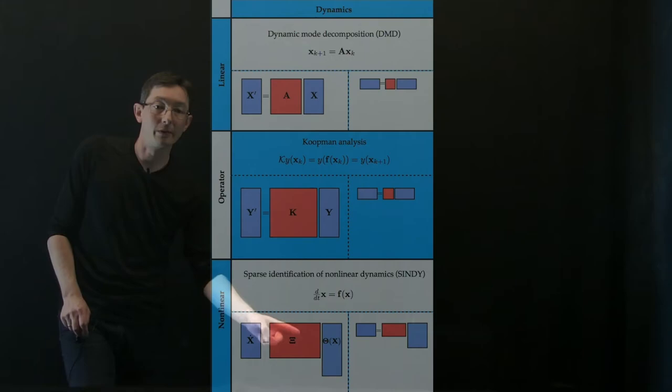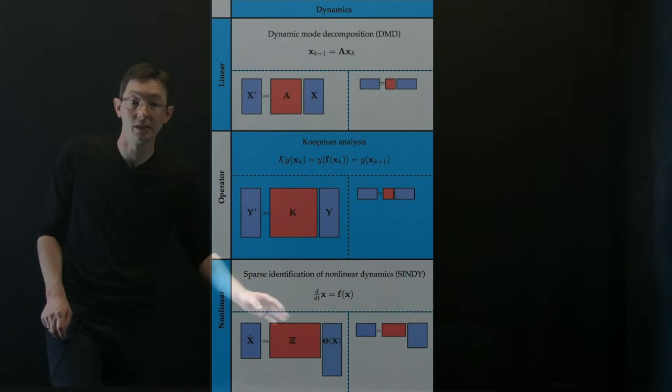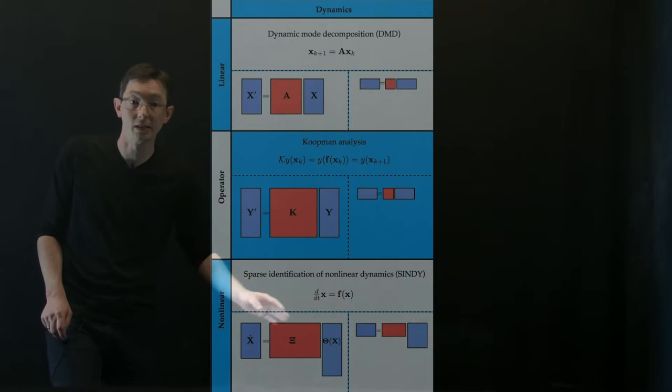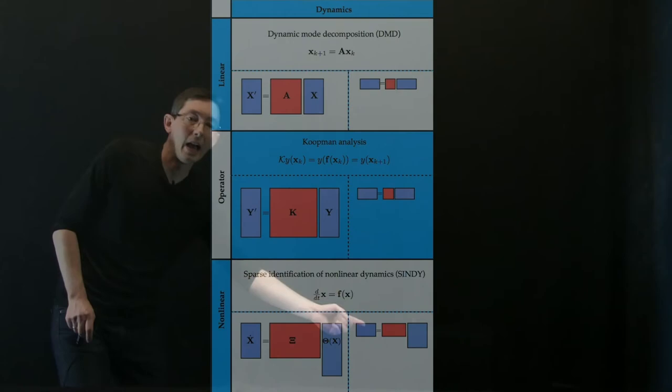And then what we do is we find the sparsest set of coefficients, the sparsest linear combination of those nonlinear functions that agrees with my data x dot. That's just the SINDY algorithm. And again, you can do this on POD coordinates or SVD coordinates if you have really big data like a fluid.